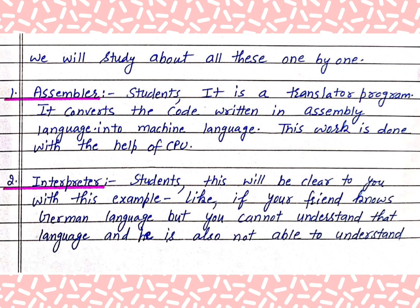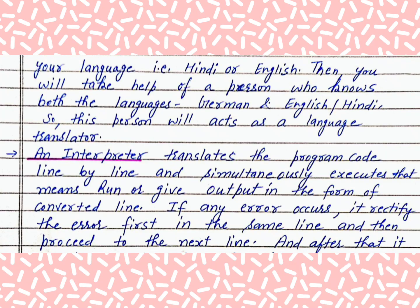Number 2, Interpreter. Students, this will be clear to you with this example. If your friend knows German language but you cannot understand that language, and he is also not able to understand your language, then you will take help of a person who knows both languages — German and English or Hindi. So this person will act as a language translator.